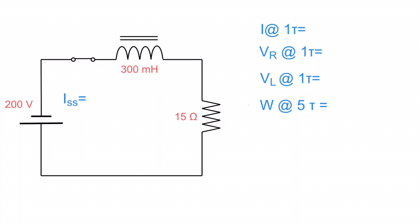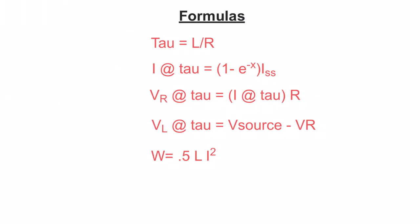Let's look at a refresher of the formulas we need. Starting with tau — our time constant. Tau is equal to inductance divided by resistance, and that gives you one tau. Remember it takes five tau to reach steady state, so whatever number we work out, we multiply by five to get to our steady state current.